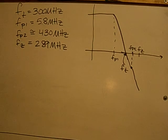For this problem, which is a continuation from the two-stage CMOS op-amp, FFT was 300 MHz, FP1 was 5.8 MHz, FP2 was found as 430 MHz, and FZ was found as 289 MHz.